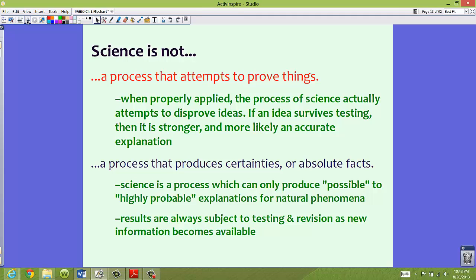Science is not a process that produces certainties or absolute facts. So science is a process which can only produce possible to highly probable explanations for natural phenomena. Does gravity exist everywhere? We don't know because we haven't been everywhere. So we can't state that gravity is an absolute fact throughout the universe. We really don't know. Perhaps there's pockets where gravity doesn't exist in some places. The results are always subject to testing and revision as new information becomes available. And this has happened several times throughout history.